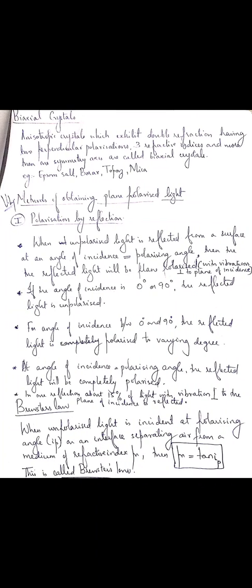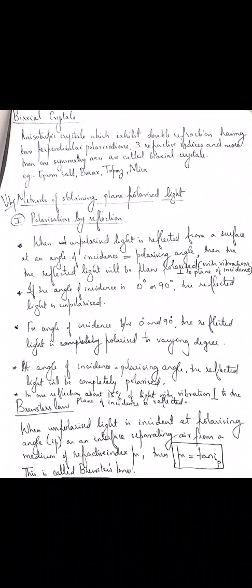So, how do you produce polarization by reflection? When unpolarized light is reflected from a surface at an angle of incidence equal to the polarizing angle, then the reflected beam will be completely plane polarized with vibrations perpendicular to the plane of incidence. Here, you also have to study Brewster's law, which must be written in your answer. When unpolarized light is incident at the polarizing angle on a surface separating air from a medium of refractive index mu, then mu is equal to tan(ip). That is called Brewster's law.